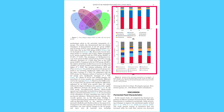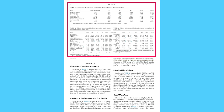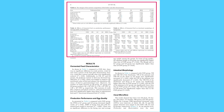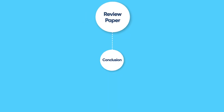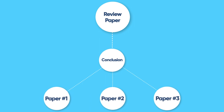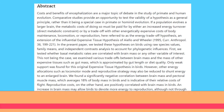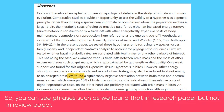The other difference between a research paper and a review paper is the results section. In a research paper, the authors present their own findings in graphs, tables, and charts, as shown here. Whereas in a review paper, the authors compile results and summaries from many papers, which are not their own. So you can see phrases such as 'we found that' in a research paper, but not in a review paper.